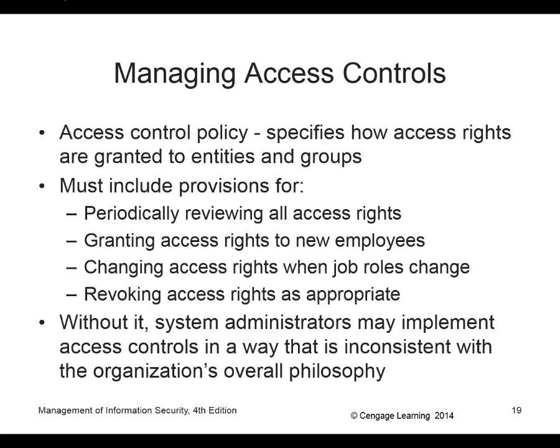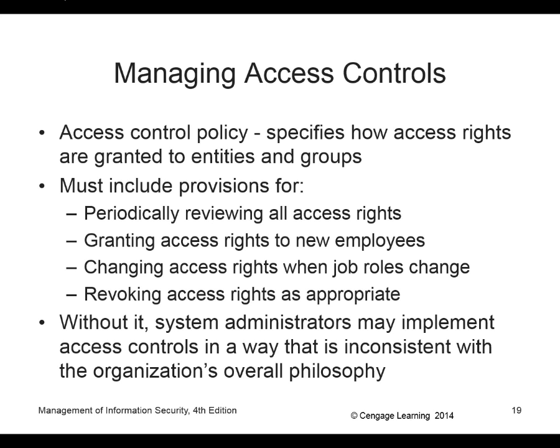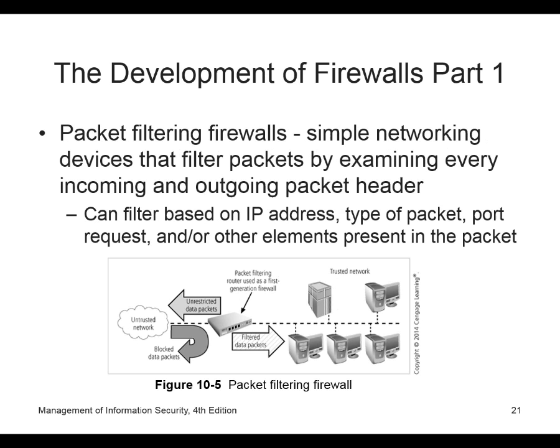Firewalls help protect us. A firewall is a device that prevents a specific type of information from moving between the outside world and the inside world — untrusted to trusted. It can be a separate system, a service running in a router, or all kinds of different configurations. A packet filtering firewall is the simplest — it literally just filters based on packets. It looks at a packet coming in and decides if it should come in or not. It can filter based on IP address, port, or request type.